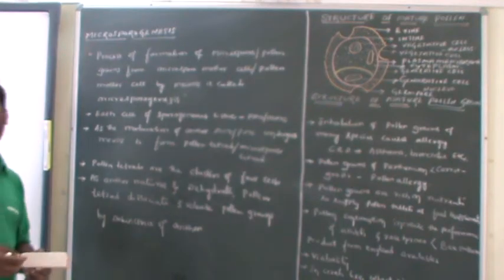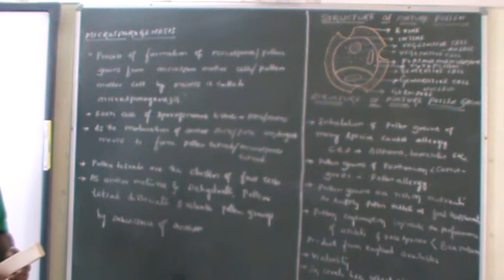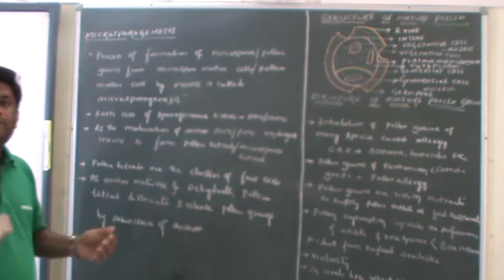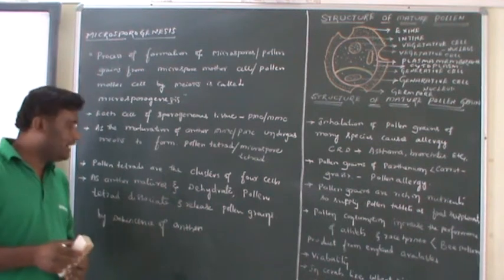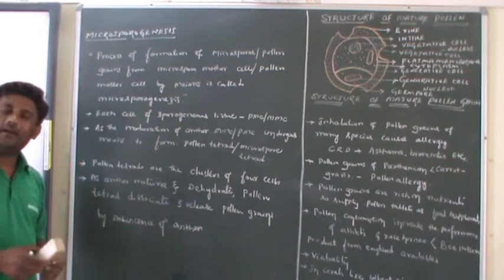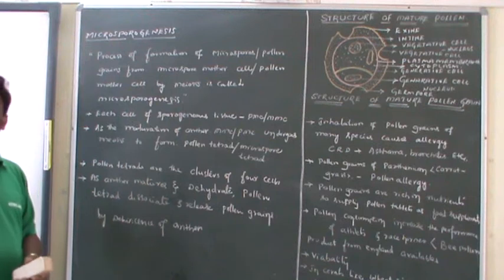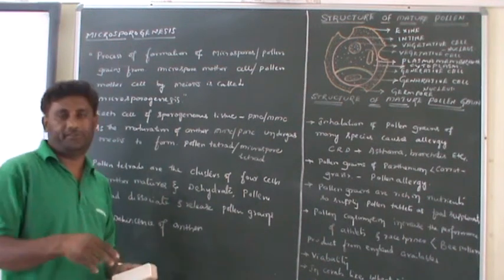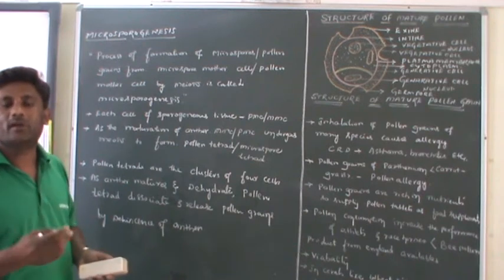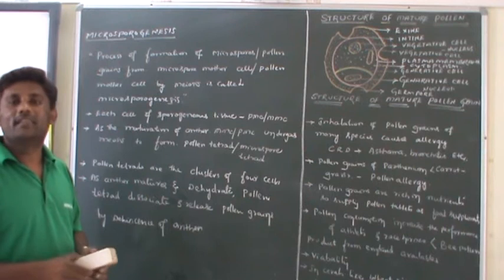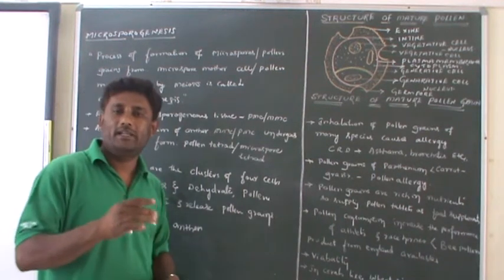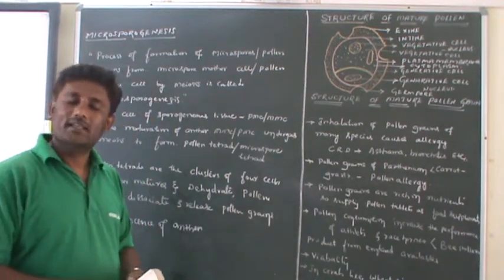As the maturation of the anther is continuous and as the dehiscence of the anther is continuous, the pollen tetrad dissociates and the cells are separated from each other. After that, each one acts as a pollen grain or microspore. These pollen grains or microspores are released from the anther by the process known as dehiscence. Dehiscence is the split opening of the anther, and by this splitting or breaking down of the anther, pollen grains are released and are ready for the next process known as pollination.